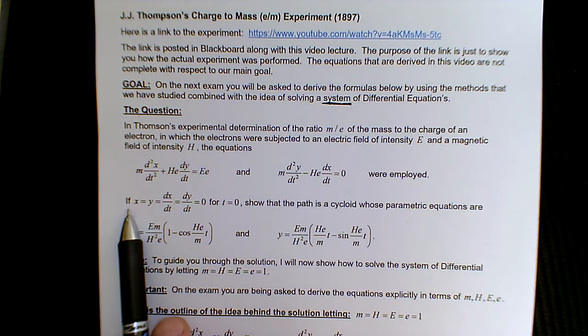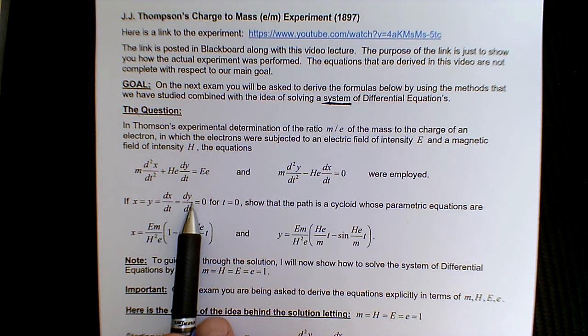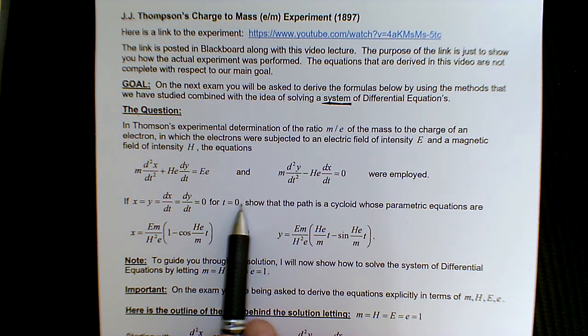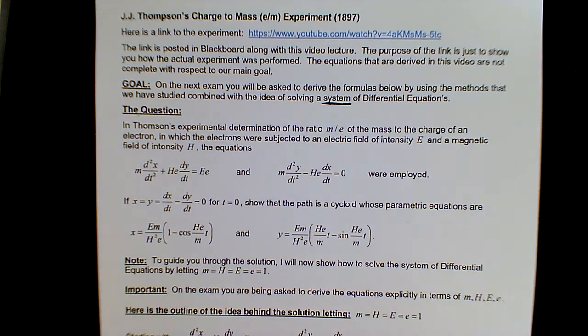We're going to let our initial conditions be such that x, y, the first derivative dx/dt and dy/dt are all zero. And we want to show that the path is a cycloid. So these are the resulting equations.